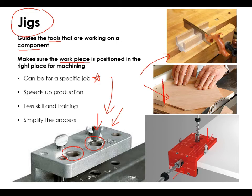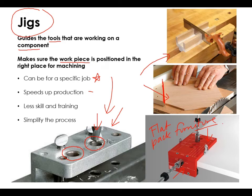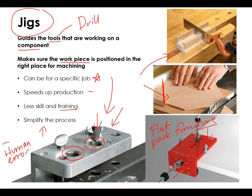Jigs are quite good for flat pack furniture where you need things to line up really, really accurately. It speeds up production because you don't have to be measuring and moving things around constantly — you just put your jig in place and drill or cut through the gaps to make the correct piece every single time. Your workers need less skill and less training, and it simplifies the process, so less human error again. A jig guides the tool — like a drill — and ensures that you cut or drill in the same place every single time.